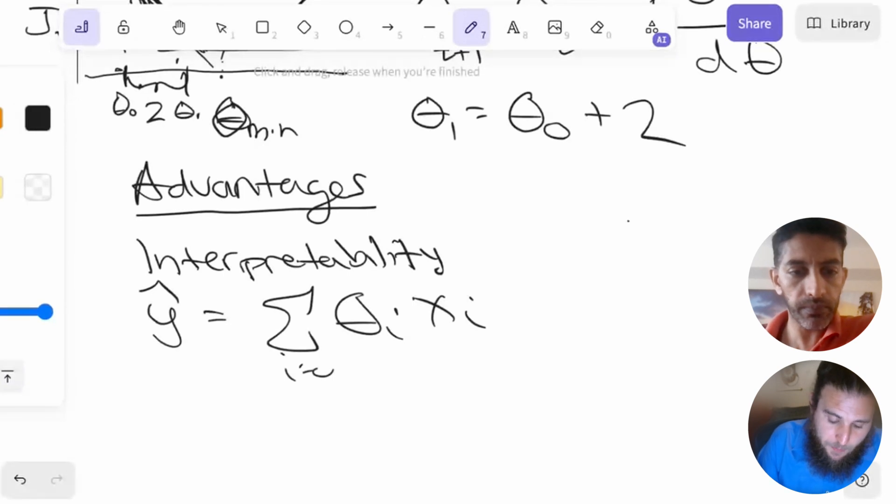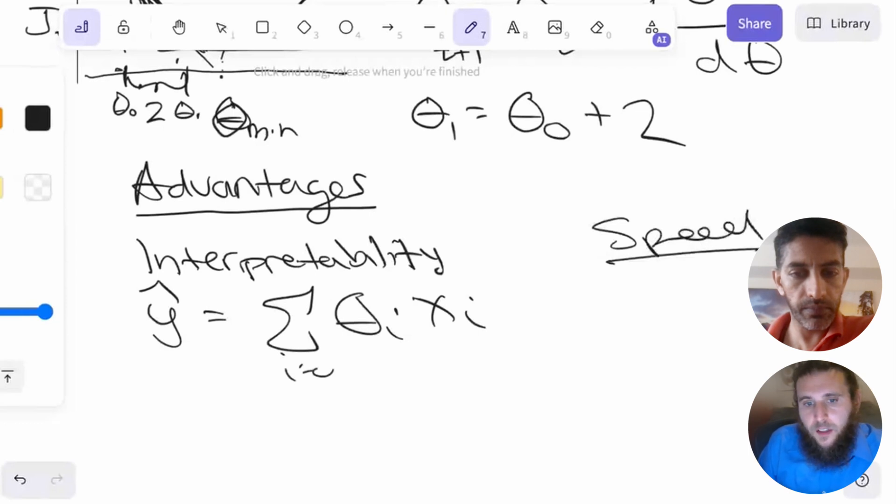Another advantage is going to be speed. Linear regression is very fast because in order to predict, we have a very simple equation. Computationally, it really doesn't take much on our machines to calculate the result of a linear regression given new input data. We can just run the equation and input the data and boom, we're done, as compared to some more intensive algorithms like SVM, which can take a much longer time.